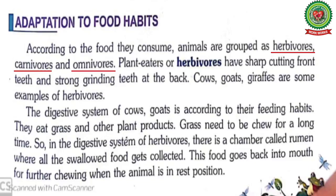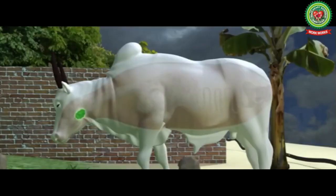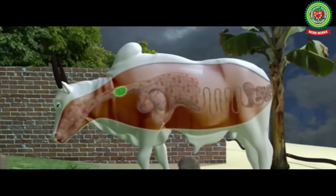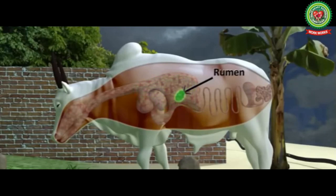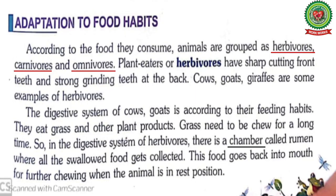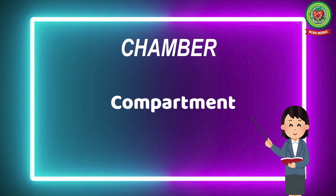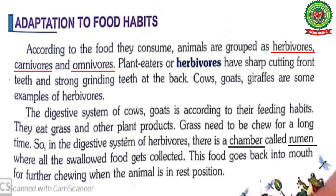The digestive system of cows and goats is according to their feeding habits. As they are herbivores, they eat grass and other plant products. The grass they eat needs to be chewed for a long time. So in the digestive system of herbivores there is a chamber called rumen where all the swallowed food gets collected.